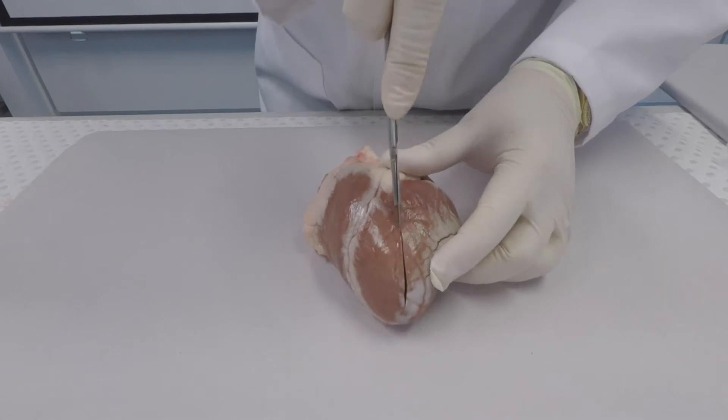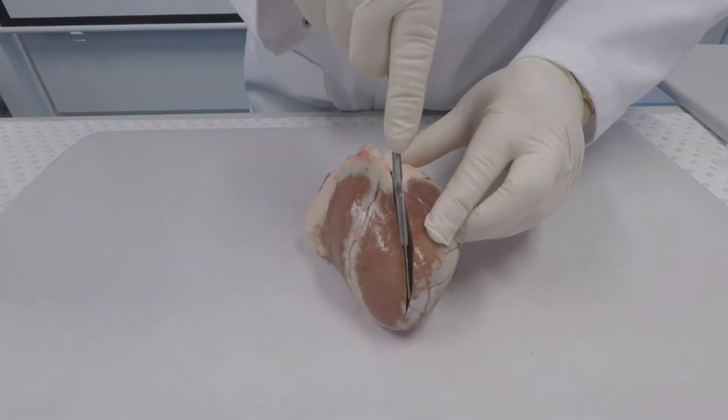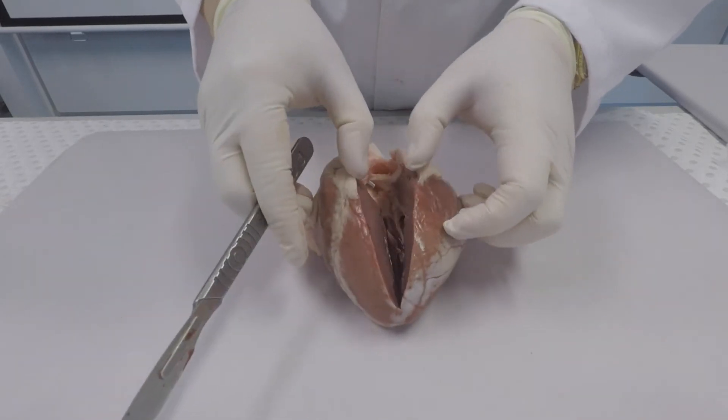These are the aorta that carries the oxygenated blood to the body, and the pulmonary artery which carries the deoxygenated blood to the lungs to be oxygenated.